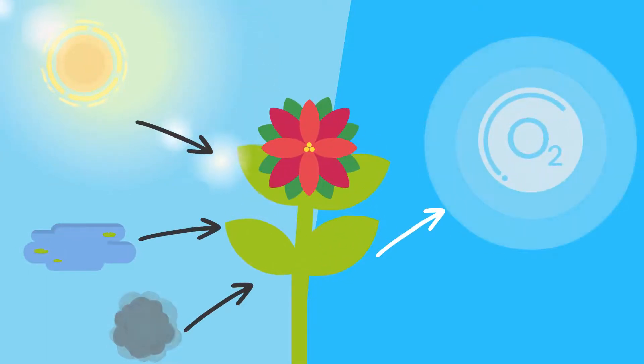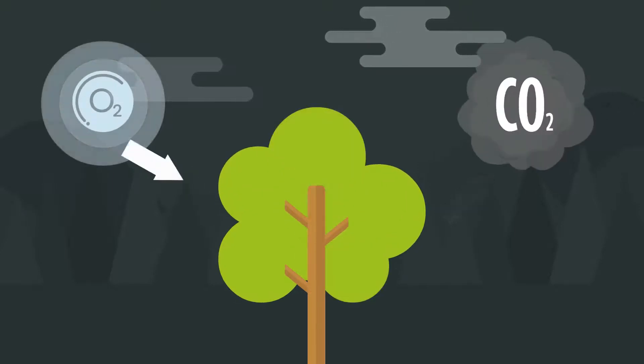In natural light, they produce oxygen via the process of photosynthesis. At night, they absorb oxygen and release carbon dioxide via the process of respiration.